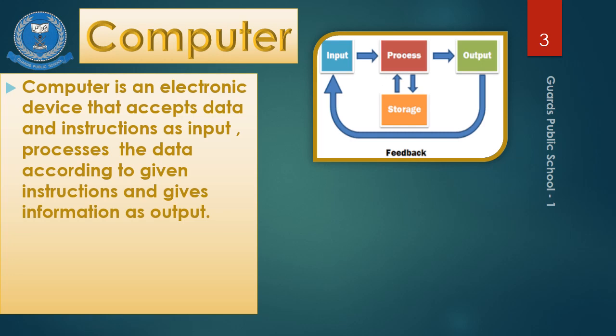In primary classes you learned that computer is an electronic machine — that's the single-line definition. But at class six level you should understand the basic function of a computer: how it processes data. First, the computer takes input from the user, then starts processing and working on it, and after processing it saves the data in storage and gives us the output.